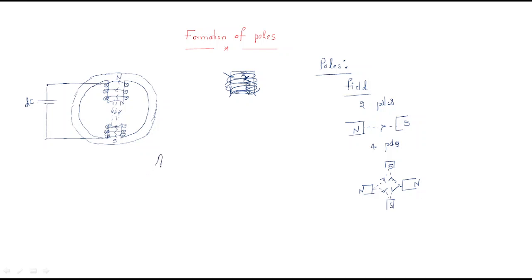In the right-hand thumb rule, the thumb points in the direction of current flow and the remaining fingers curl to show the direction of the magnetic flux. The flux flows in a loop from north pole and collects at the south pole. This is how poles are formed.